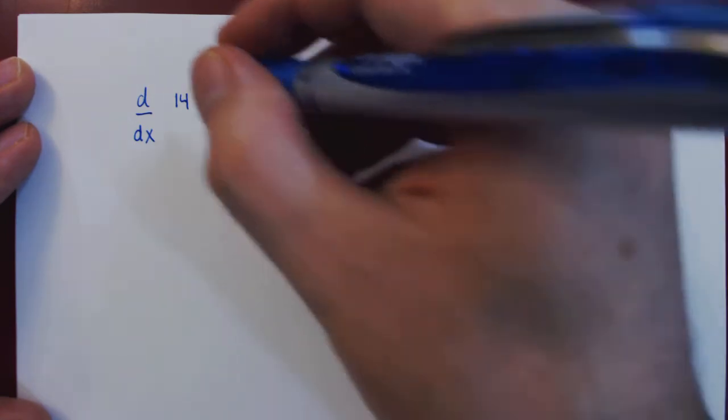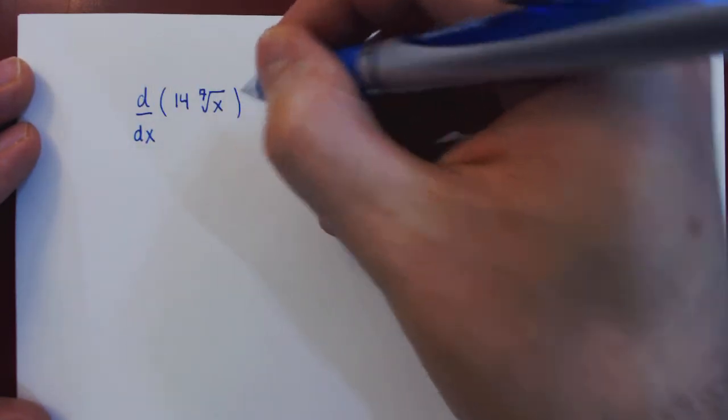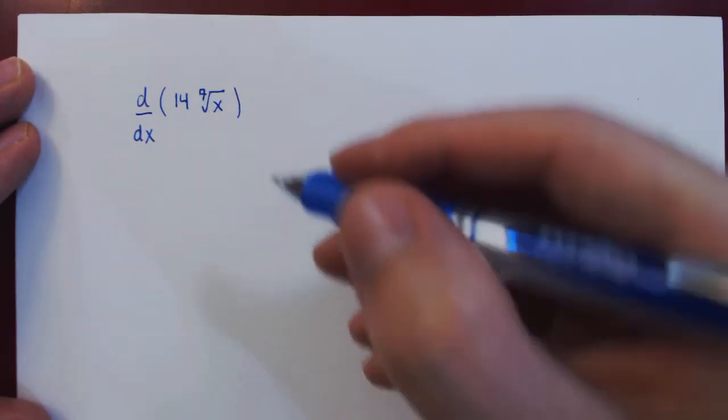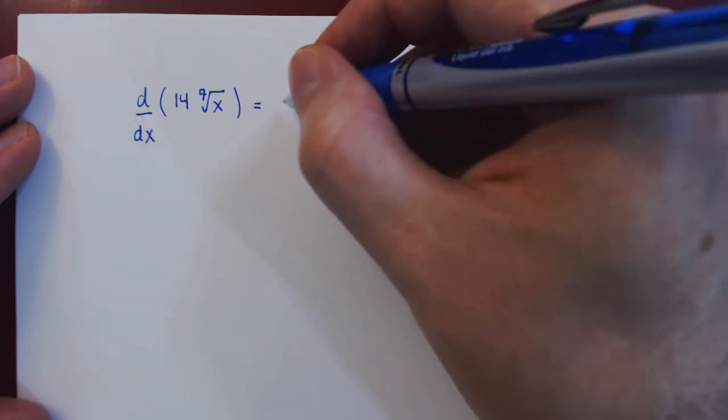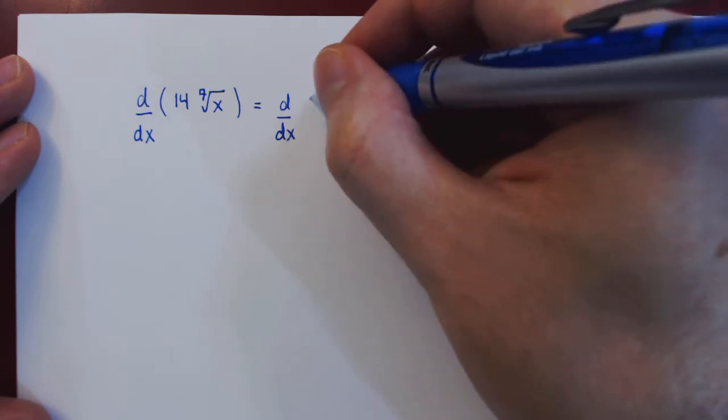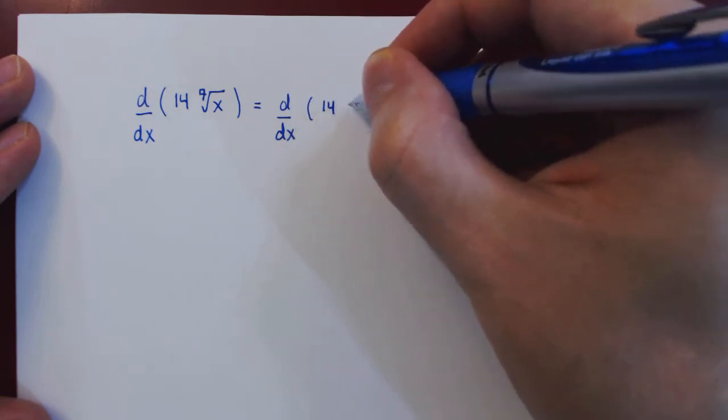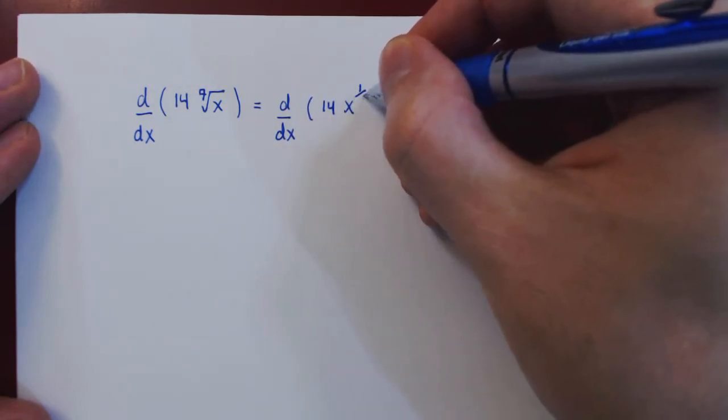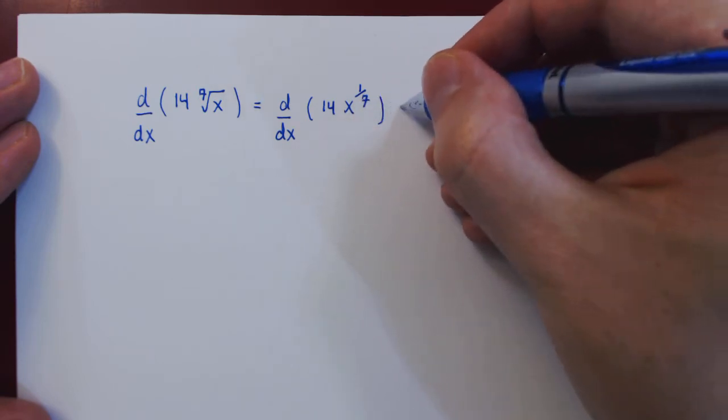Well, before we differentiate, we will rewrite the 7th root of x as a power of 1 over 7. And now we can go ahead.